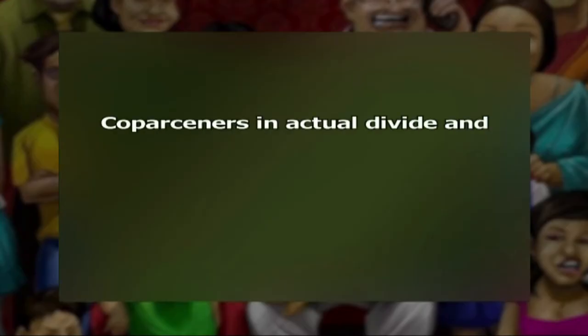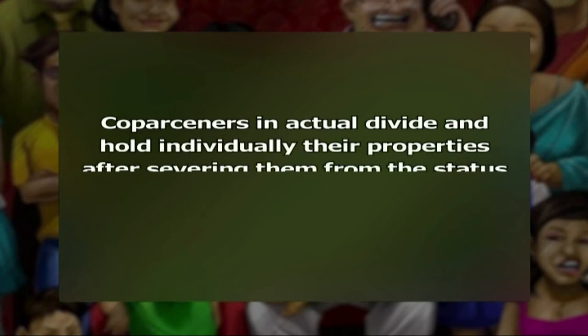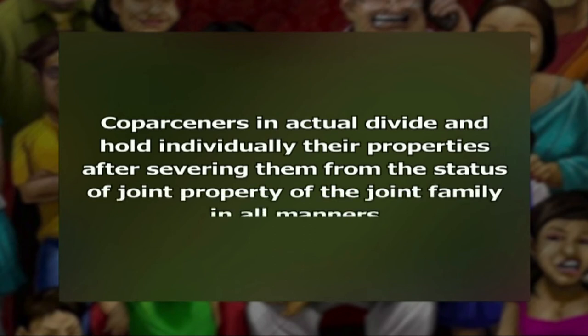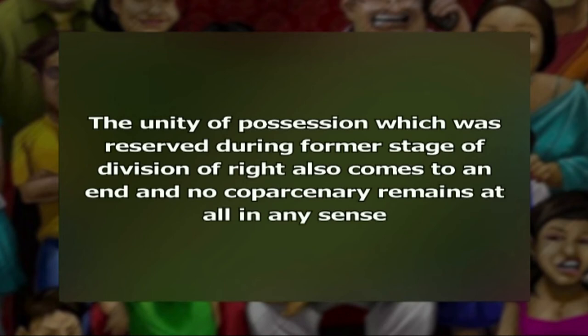Division of property: What comes after the division of right is the division of property by metes and bounds — the real, actual, or physical partition. At this stage, the co-parseners actually divide and hold their properties individually, severing them from their status as joint property in all manners. The unity of possession which was reserved during the former stage also comes to an end and no co-parsenery remains at all in any sense. The shares which the co-parseners receive are their individual shares and they are the exclusive owners. Division of right is one step less than the conclusive result of partition, that is actual division of property.